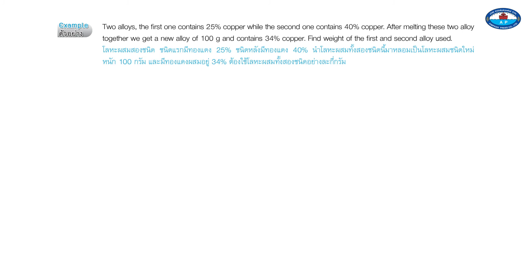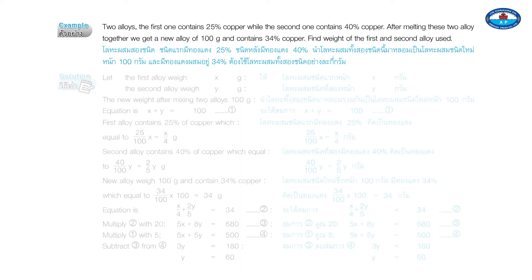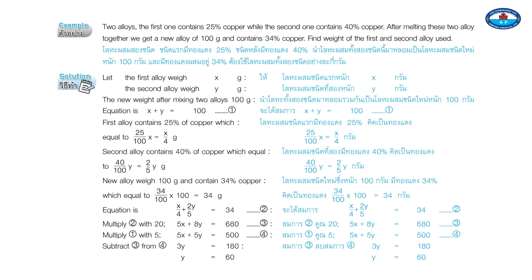Example: Two alloys — the first contains 25% copper and the second contains 40% copper. After melting them together, we get a new alloy of 100 grams containing 34% copper. Find the weight of each alloy used. Solution: Let the first alloy weigh x grams and the second alloy weigh y grams. Since the new mixture weighs 100 grams: x plus y equals 100.